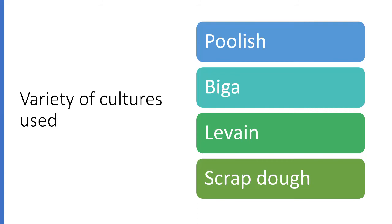Next is biga, which is the Italian term for pre-ferment. Although the word can in theory refer to a starter of any consistency, it is usually used for stiff pre-ferments. Because stiffer doughs ferment more slowly than wet ones, a biga is generally made with more yeast — usually twice the quantity used in a poolish to get the same fermentation time. The next is levain, which is a general French term for yeast pre-ferment. It is usually stiff like biga, but the term is sometimes used for thin pre-ferments like poolish as well.